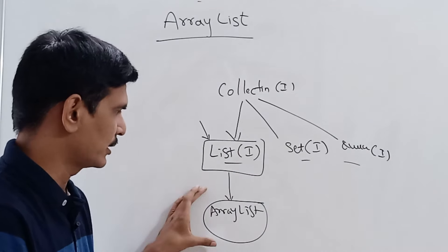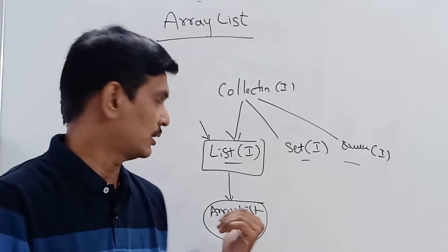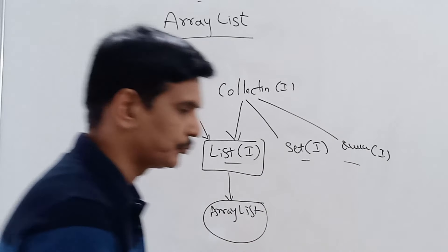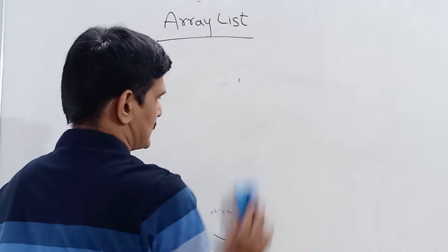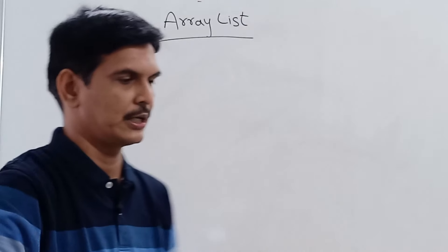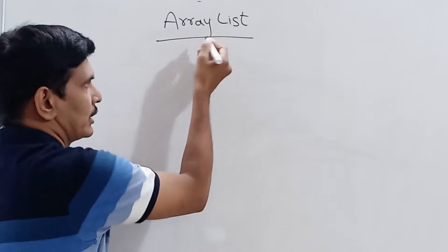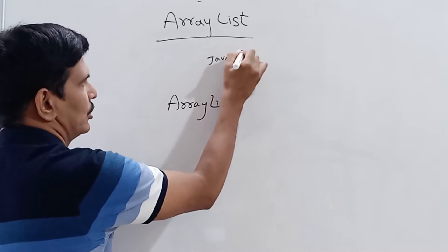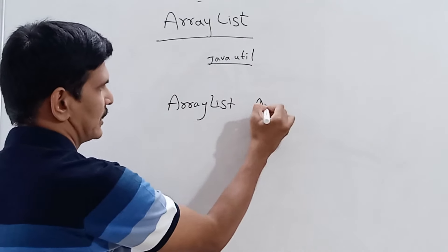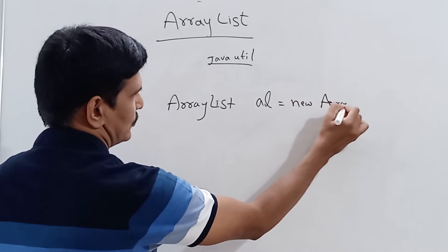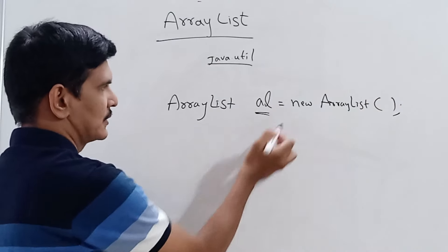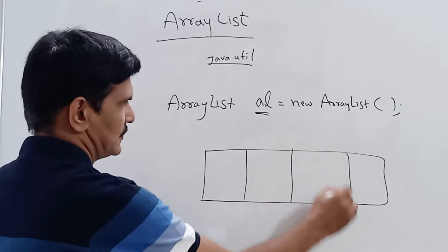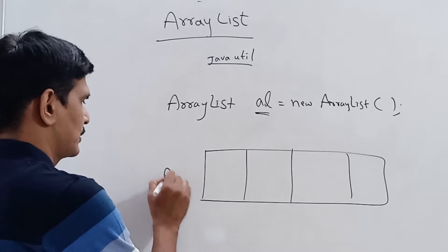ArrayList has the same behavior — it allows us to store duplicate elements and preserves insertion order. ArrayList is a class which implements all methods derived from the List interface. When we declare an ArrayList object, the class is present under the java.util package. We declare it as: ArrayList al = new ArrayList(). This creates multiple indexed locations where we can store elements or objects.